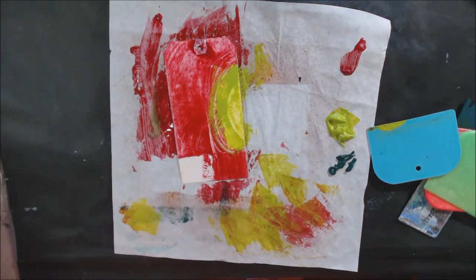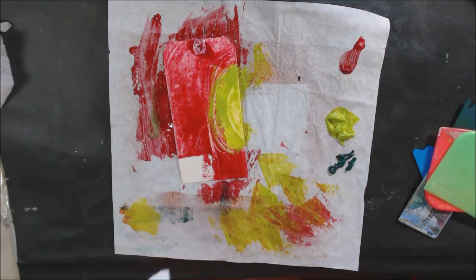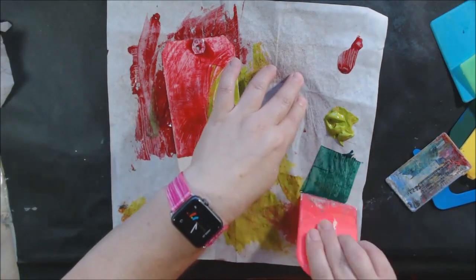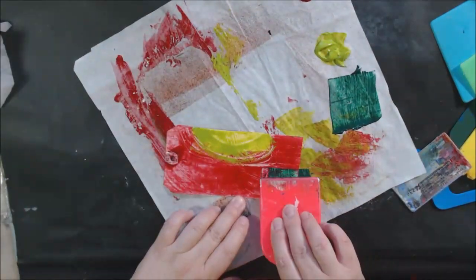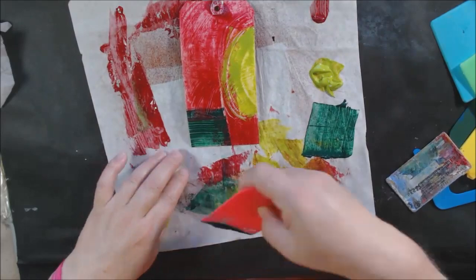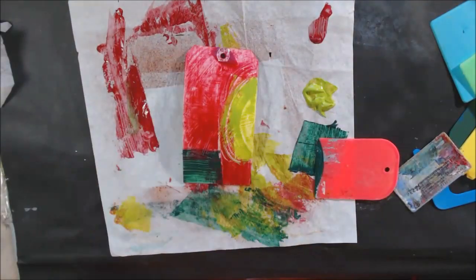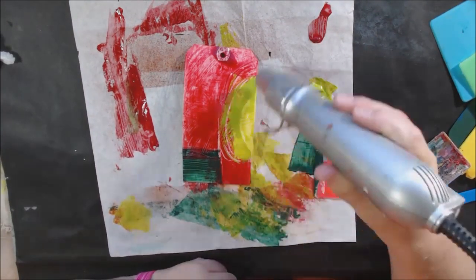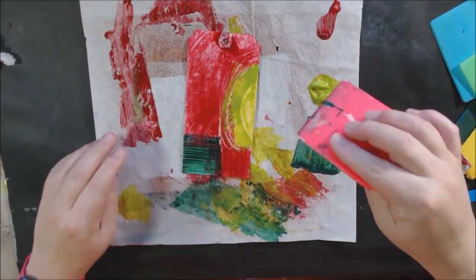I used my handy dandy color wheel to select my colors. I've been in a fall color mood and wanted to do some reds and golds. I started out by picking alizarin crimson hue, which is a type of cool red.